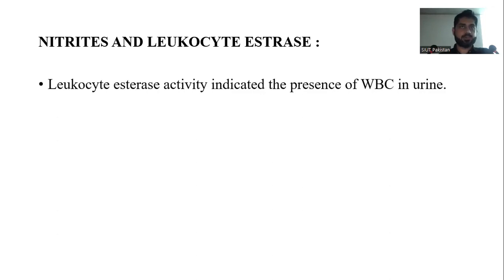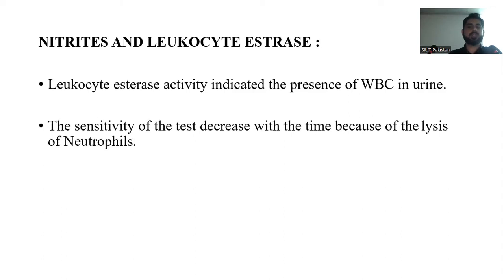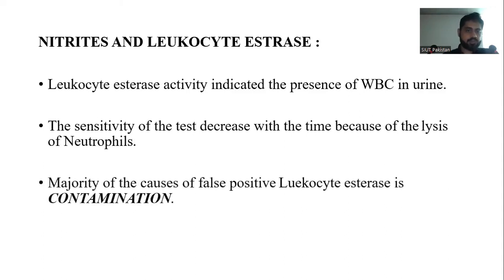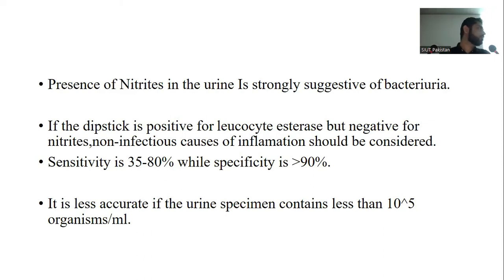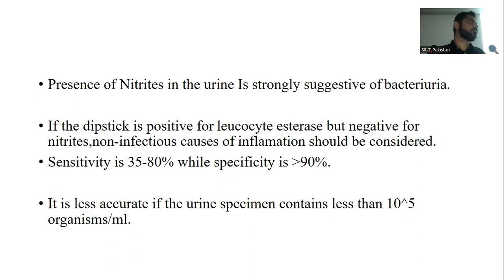Leukocyte esterase activity indicates the presence of WBCs in urine. Test sensitivity decreases over time due to lysis of neutrophils. The majority of false positive leukocyte esterase results are due to contamination. Presence of nitrites is strongly suggestive of bacteria. If dipstick is positive for leukocyte esterase but negative for nitrites, non-infectious causes of inflammation should be considered. Sterile pyuria — defined as WBCs in urine without infectious cause and negative culture — is associated with tuberculosis and stones. Test sensitivity is 35–80% and specificity is greater than 90%.